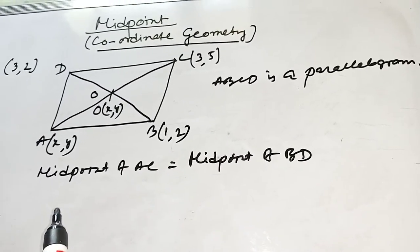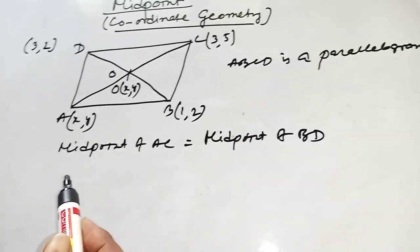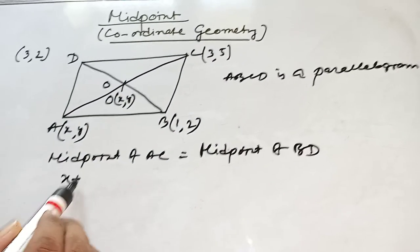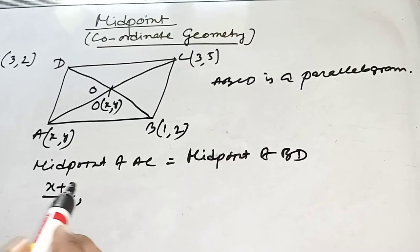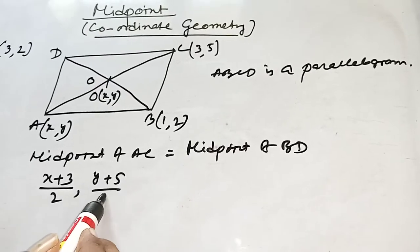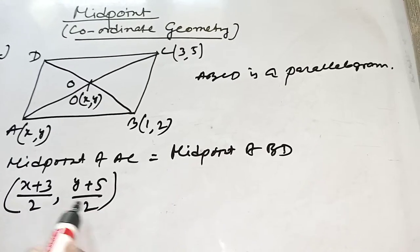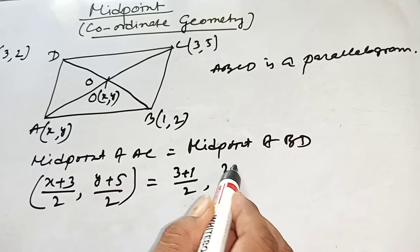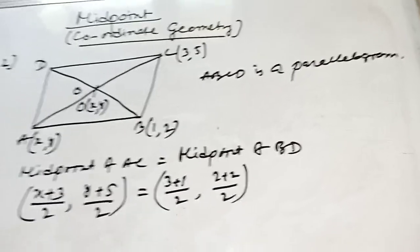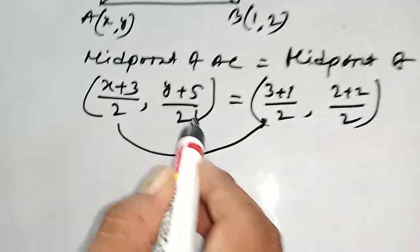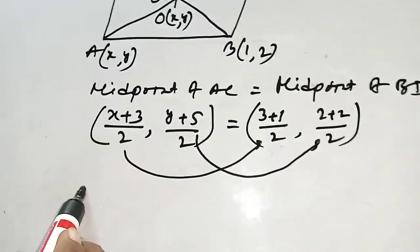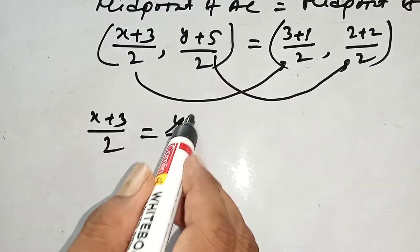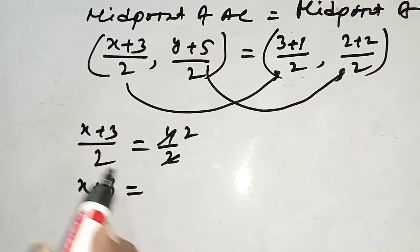In a parallelogram, the diagonals bisect each other. That means the midpoint of AC equals the midpoint of BD. Midpoint of AC is (x plus 3 by 2, y plus 5 by 2). Midpoint of BD is (3 plus 1 by 2, 2 plus 2 by 2). Now, this x-value equals this x-value: x plus 3 by 2 equals 4 by 2, equals 2. That means x plus 3 equals 4.